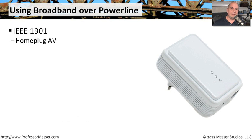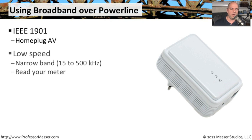The IEEE standard for broadband over power line is IEEE 1901, and this is based on a standard called HomePlug AV. So if you're looking at devices to purchase for this, you'll see that IEEE number on there, but you'll most commonly see this HomePlug name. It's something that everybody can remember a lot easier than IEEE 1901.